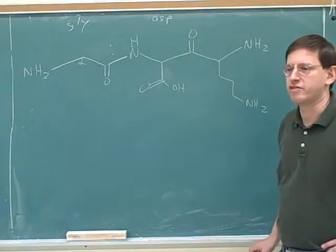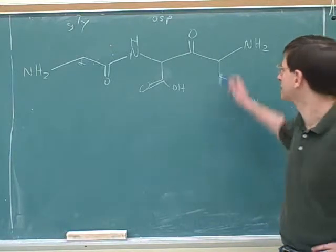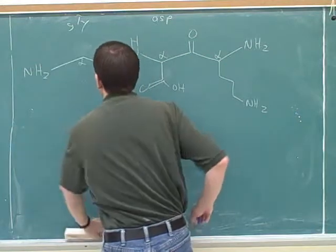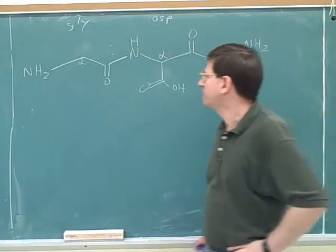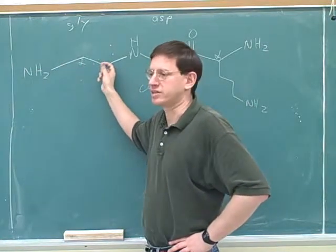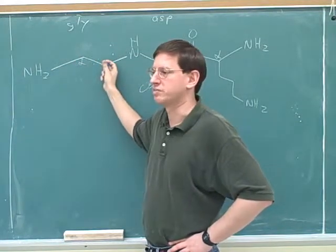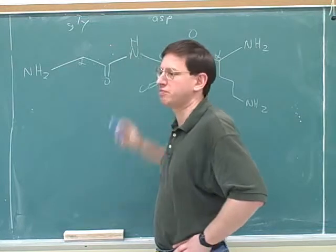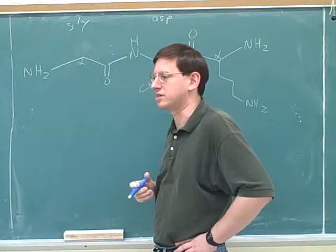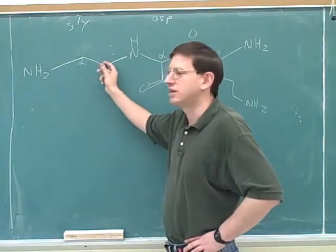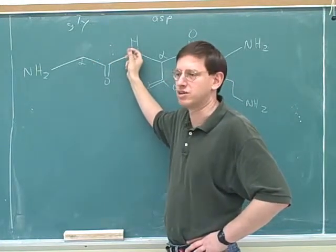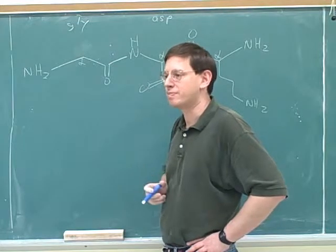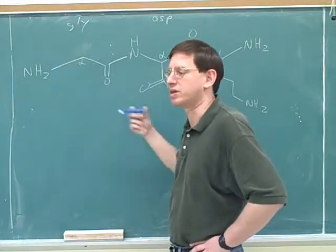What I've drawn here is a tripeptide — a peptide consisting of three amino acids. The basic backbone of an amino acid is nitrogen, alpha carbon, and carboxy carbon. In a peptide, the carboxy end of one amino acid attaches to the amino end of another, which means the carboxy carbon is no longer a carboxylic acid — it's now an amide. Peptide bonds are amide bonds.